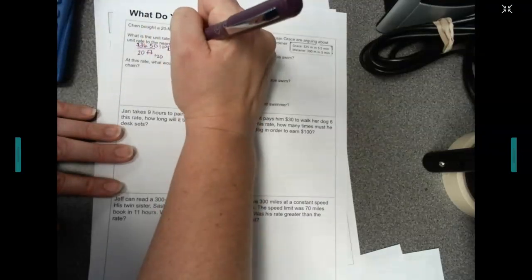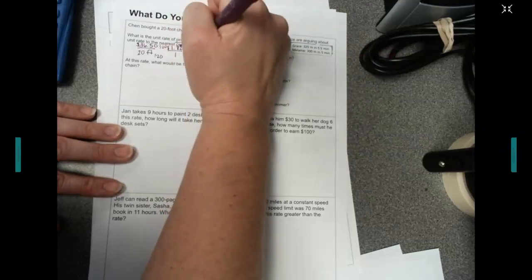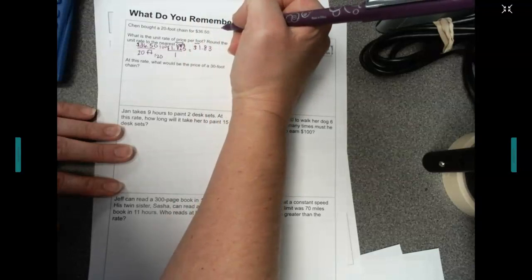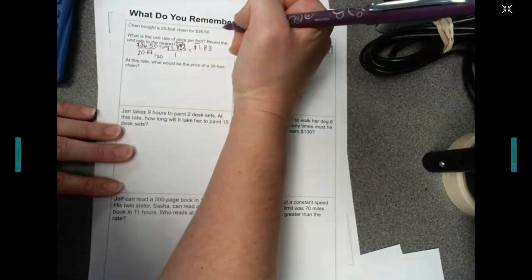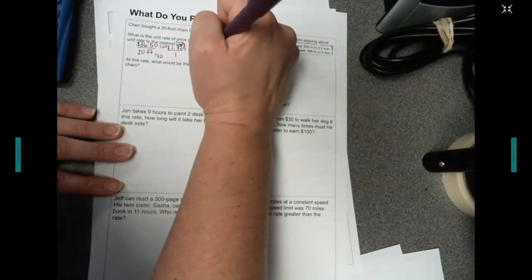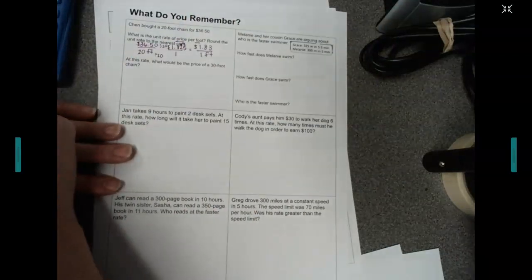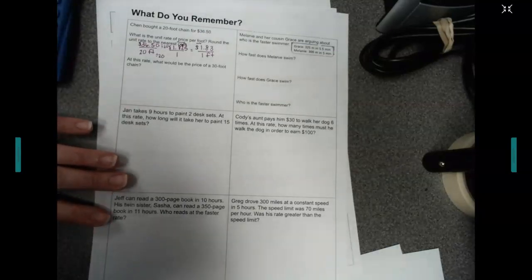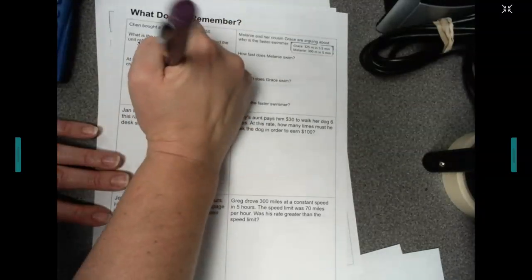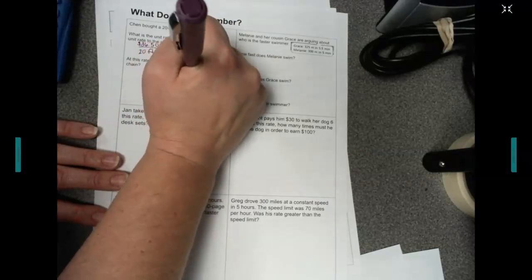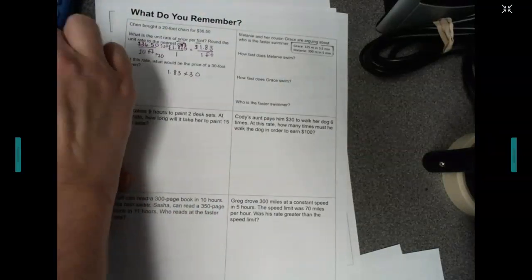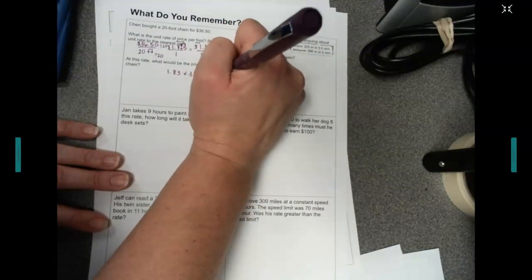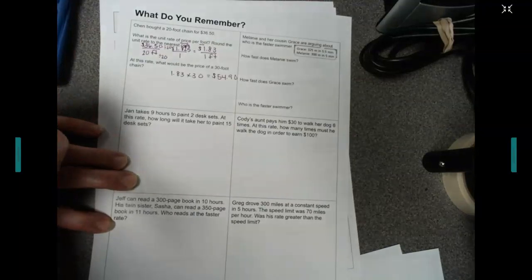But we're going to say, hey, five, take that two up, so it's $1.83 per one foot. At this rate, what would be the price of a 30-foot chain? So all we're going to do is we're going to take 1.83, we're going to times it by 30. And it's going to give us $54.90 as our answer.